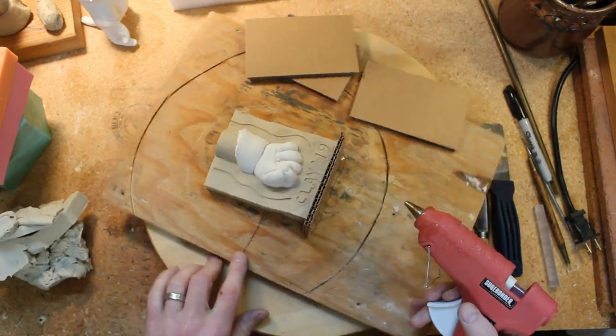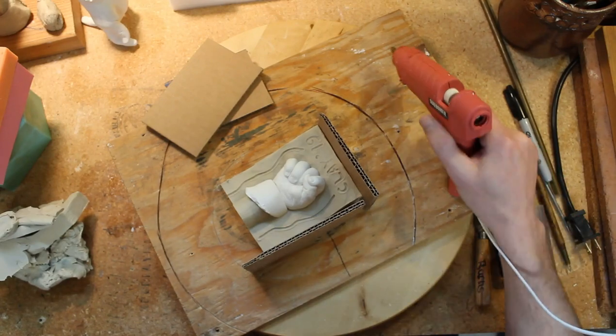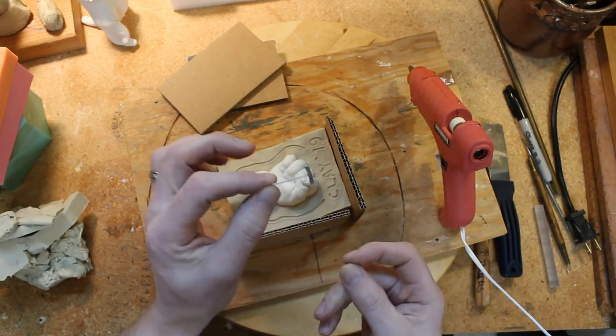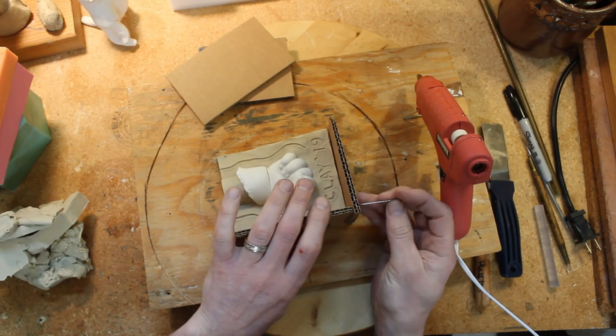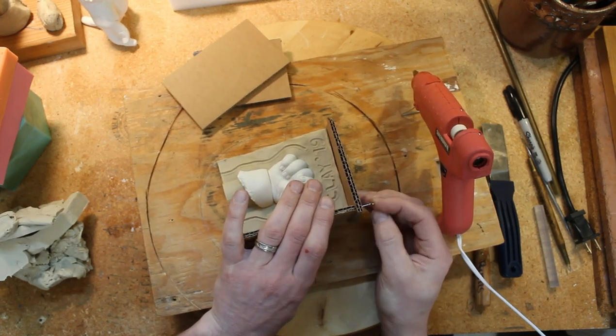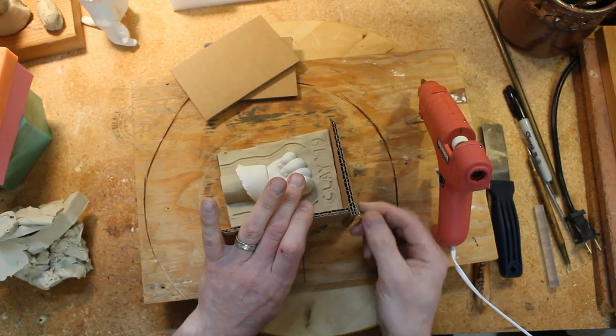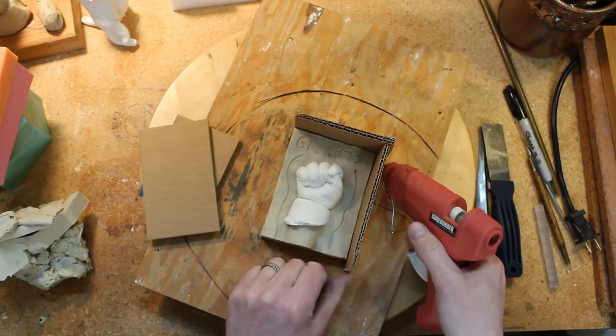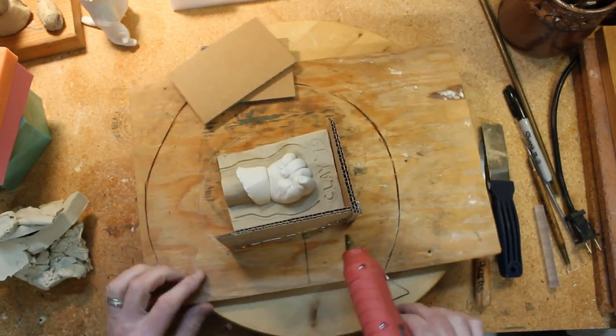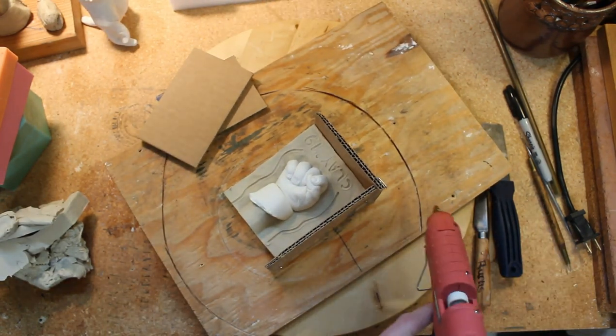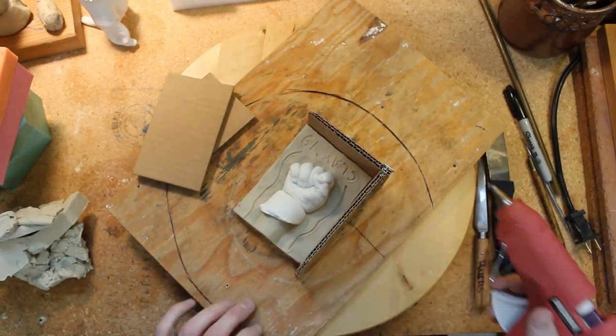If you have tee pins, you can run tee pins through these pieces like this. That'll hold your walls very well. Makes it nice and rigid as you run the hot glue. Try to do this in one continuous bead of hot glue.